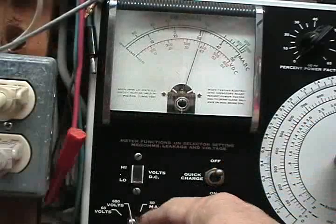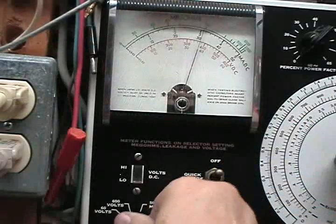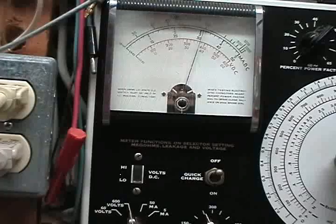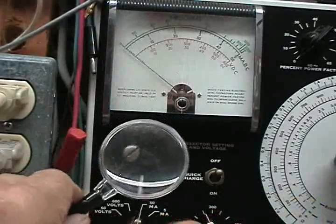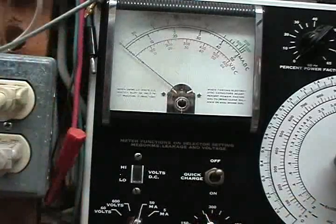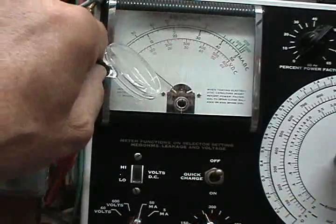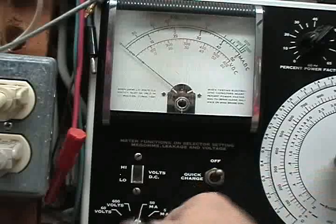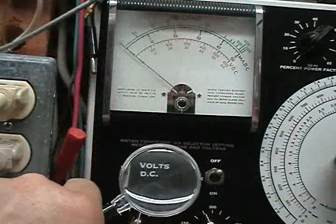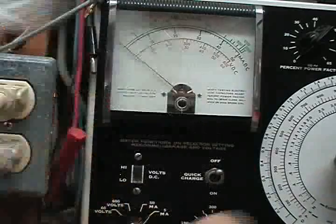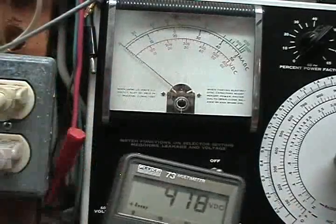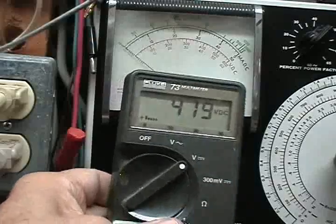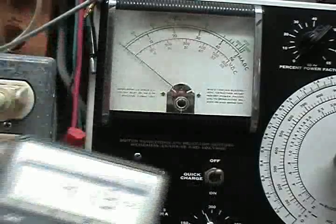Now I'm going to flip the current, this tells you how much leakage current there is. First on the 50 milliampere scale, you can see it's not even moving the needle. Now on the 5 milliamp scale, not even moving the needle.